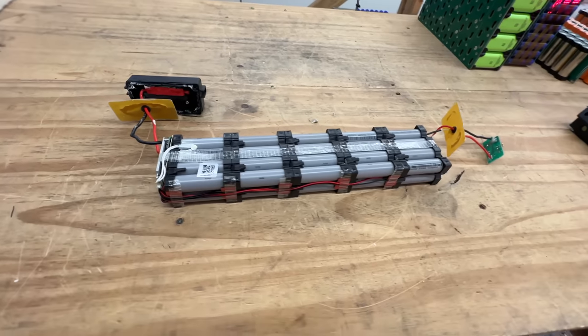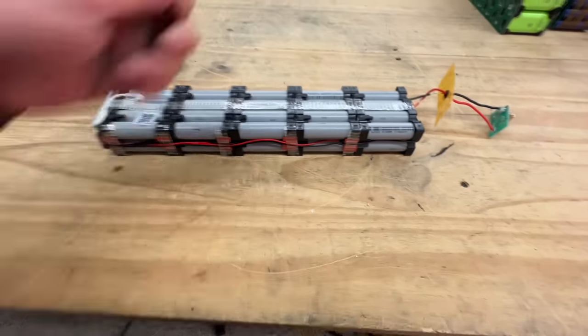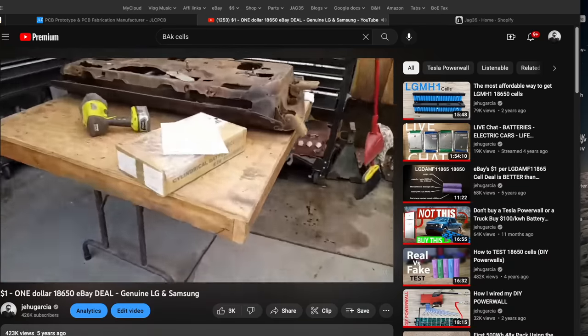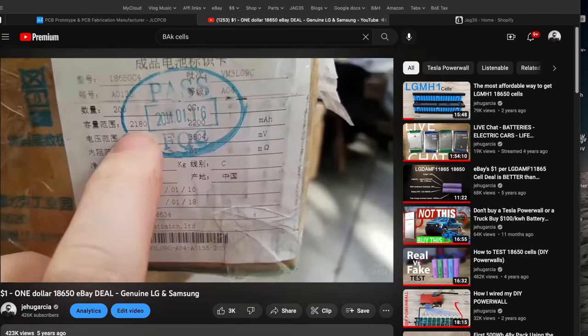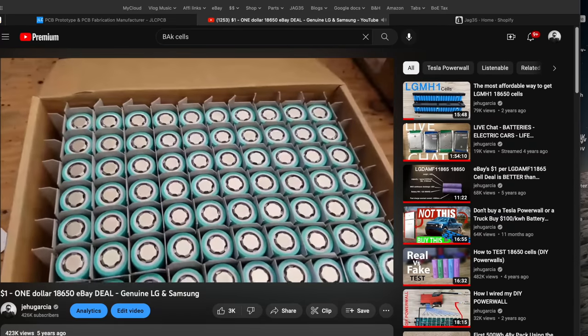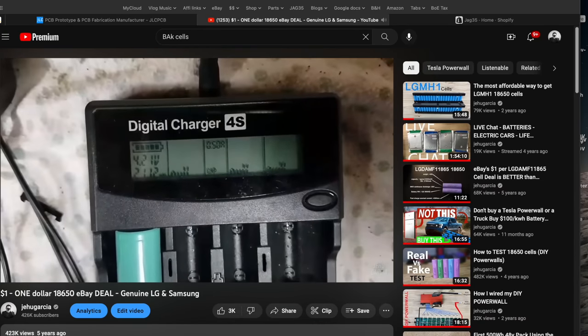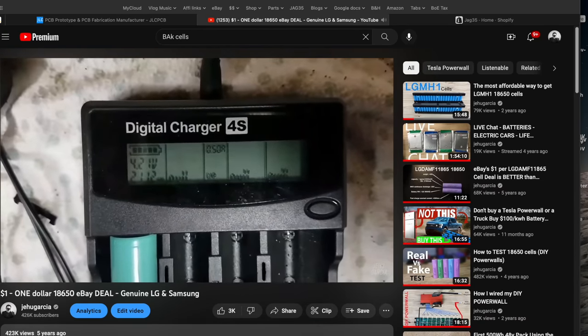Alright, so here we go. It looks like they are BAK cells - not the worst cells. They're a Chinese manufacturer. We bought some, I want to say maybe like six years ago. We found a load of them new here in the states and we bought them for a dollar a cell, and a bunch of us built packs with them. They weren't terrible. They're just Chinese, not as good as the name brand cells.